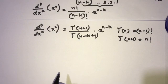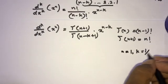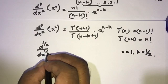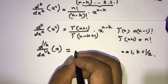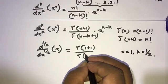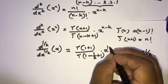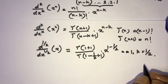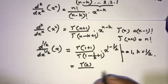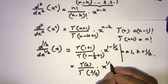Now we want to find the half derivative of x. For that, we set n equal to 1 and k equal to one half. So we write d to the one-half over dx to the one-half of x, which equals gamma of (1 plus 1) over gamma of (1 minus one half plus 1), times x to the (1 minus one half). This simplifies to gamma of 2 over gamma of three halves, times x to the one half.